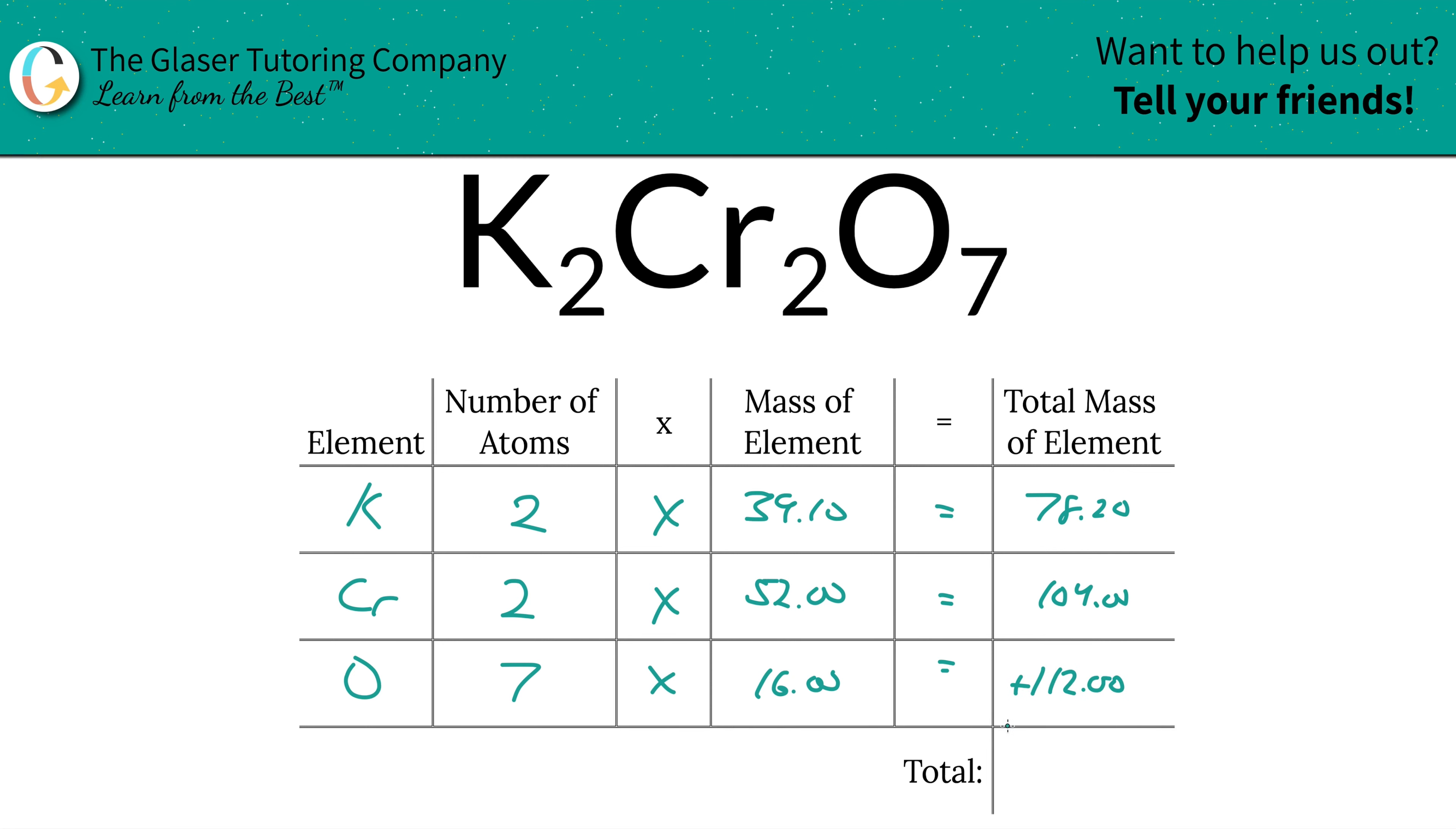Now, to find the total mass of the entire compound, all we simply got to do is add up this entire column together, right? So 294.20. And the units here are in terms of AMU because we are calculating molecular mass. And that's it. Now you know how to find the molecular mass of potassium dichromate.